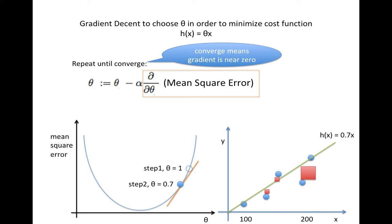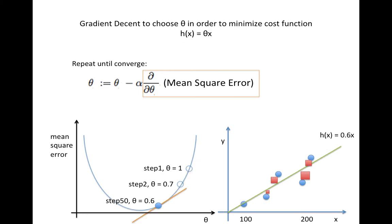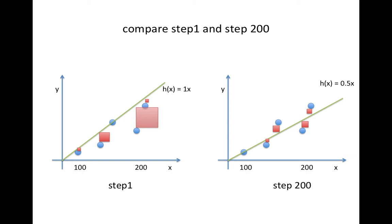Suppose the output from the initial step gives theta = 0.7. We run the second step with theta = 0.7, and the gradient is still greater than 0, so the next theta will be smaller than 0.7. In step 50, suppose theta is 0.6 — you may notice the red error boxes in the right chart are getting smaller. By step 200, theta is 0.5 and the mean square error has converged. You can see the linear line now has much less error and fits near the observed data points.